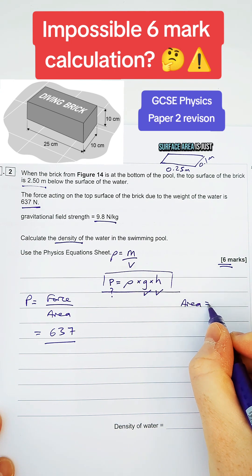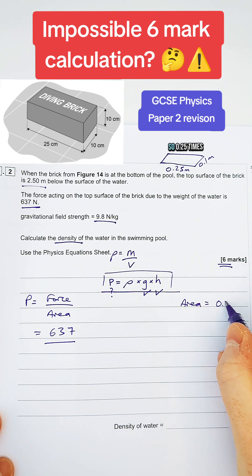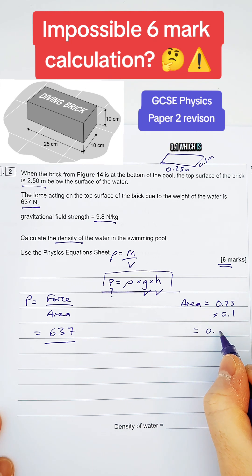So to find the area, all I need to do, surface area, is just multiply those two together. So 0.25 times by 0.1, which is 0.025, and that's metres squared.